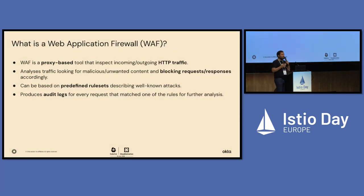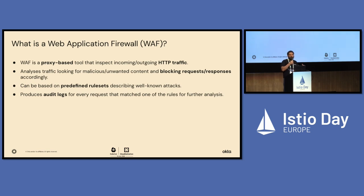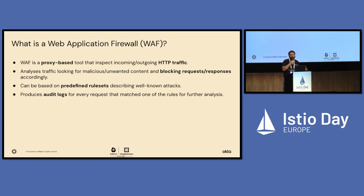What is a web application firewall? A WAF is a proxy-based tool that inspects incoming and outgoing HTTP traffic. This is an L7 tool, mainly. It analyzes traffic looking for malicious payloads, malicious content, or unwanted content, because you can pre-define that. It can block requests and responses accordingly. It can be based on a pre-defined set of rules that include well-known vulnerabilities and mitigation. And it can produce audit logs for every request that matches one or another rule, and then you can apply further analysis to it.